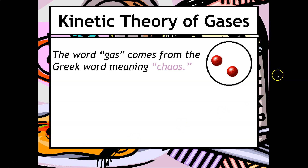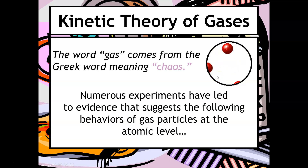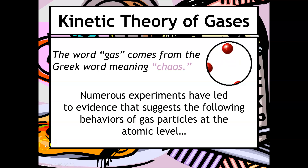The word gas comes from the Greek word meaning chaos. If you look on the right-hand side here, you can see what gases look like at the particulate level — these particles can collide with each other and the walls of the container.